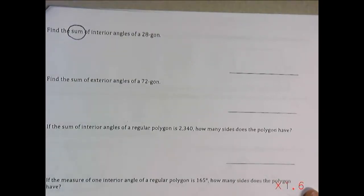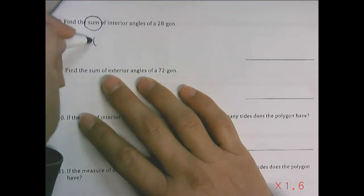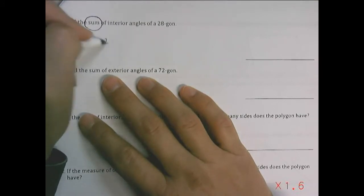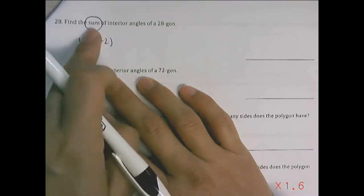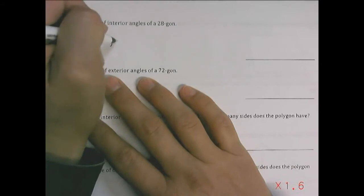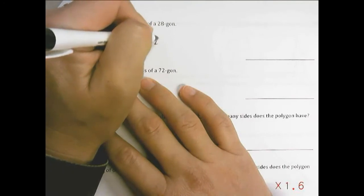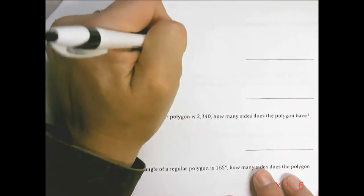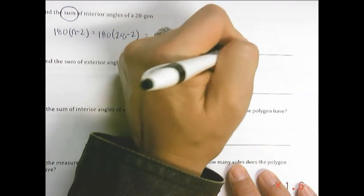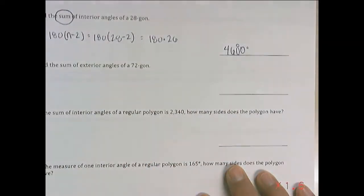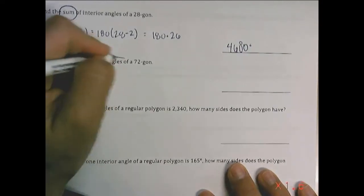Number 28 wants the sum of interior angles, not just one. It's the same formula — 180 times (n minus 2) — but this time we're not dividing by the number of sides because we want all of them. So we do 180 times (28 minus 2), which is 180 times 26, giving us 4,680 degrees.